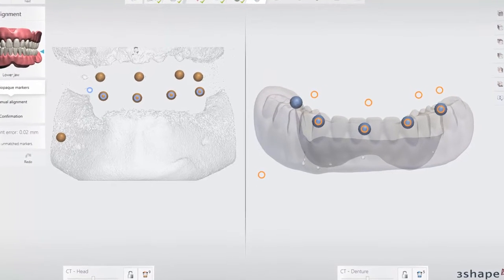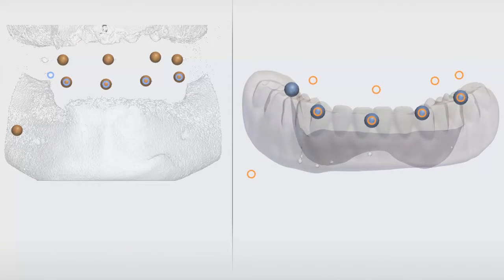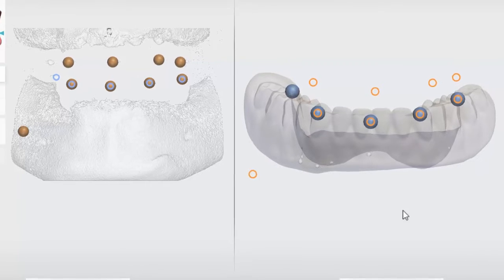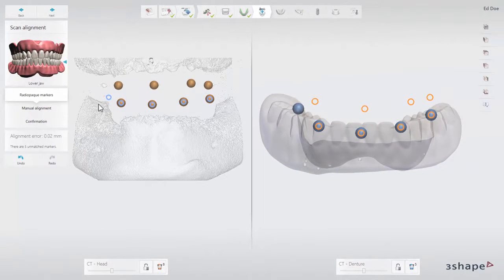Here you will see the two CT scans with the radio opaque markers. The initial detection of the radio opaque markers is done automatically by the software. Keep in mind that the same number of markers should be detected on both scans and their position should coincide.